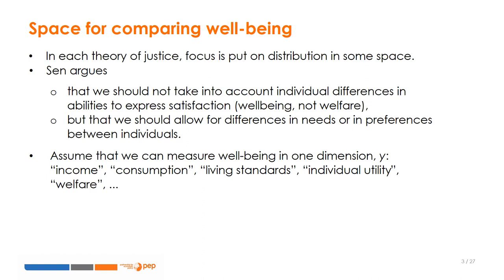For simplicity, as is the case in most distributive analyses and following the welfarist approach, we assume that per capita income is a good proxy for wellbeing, which is observable. Of course, this assumption is not immune to criticism. One such criticism is that income does not capture goods and non-market commodities such as health, peace, freedom, etc.